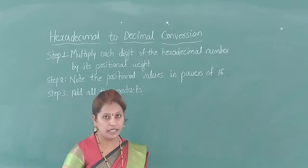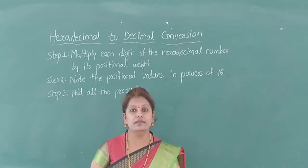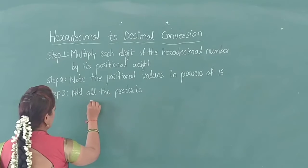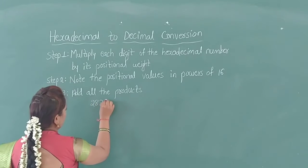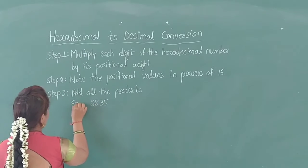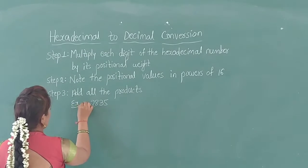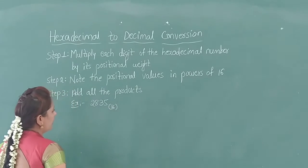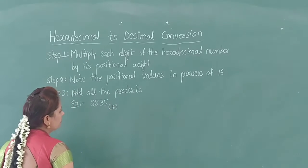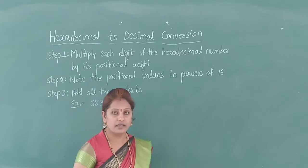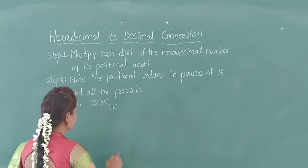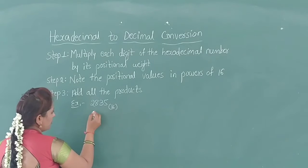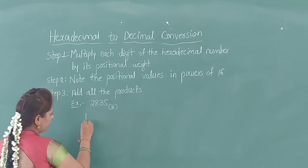We will see an example. Consider the hexadecimal number 2835. Convert it into decimal number system.